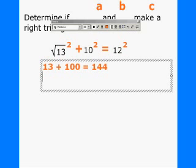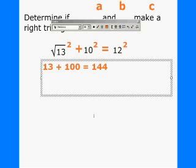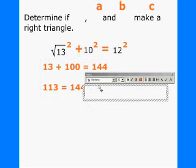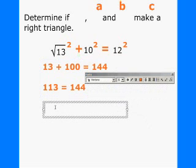As we simplify, 13 plus 100 gives us 113, and that's supposed to equal 144, but it does not. Therefore, these measures do not make a right triangle.